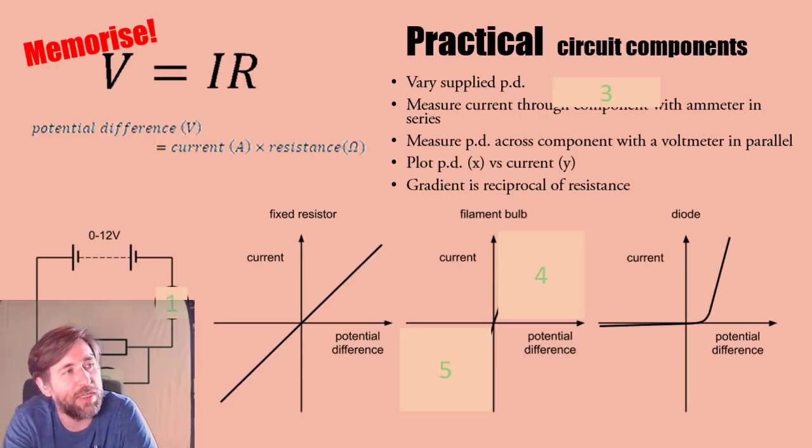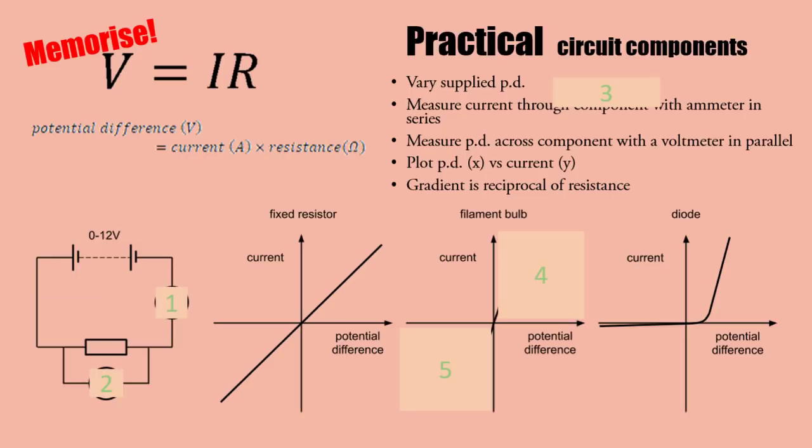Here's that IV characteristics that are really an application of V equals IR. You're going to vary the supply PD, measure current through the component with an ammeter. Remember the ammeter is in series, voltmeter in parallel. Measure potential difference and current and plot potential difference against current. The fixed resistor is a straight line. Filament bulb has a decreasing gradient but always positive. A diode has no current in the negative direction and in the positive direction after about 0.7 volts.